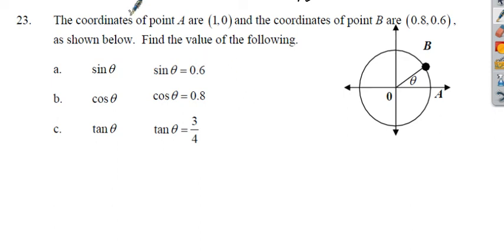Okay, so for number 23, the coordinates of point A are 1, 0, also known as the unit circle.